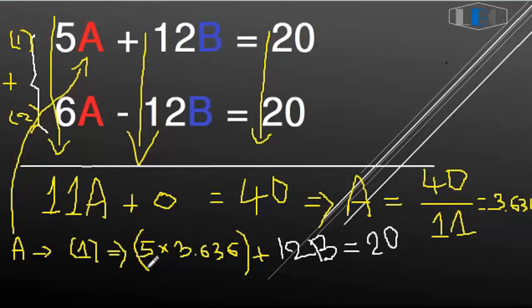First we calculate in the bracket first. Please calculate. So now 5 times 3.636 equals...